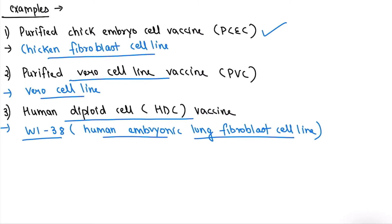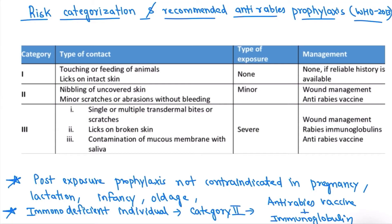Now coming to the most important part: risk categorization and recommended anti-rabies prophylaxis as given by WHO in 2013. There are three categories. In Category 1, the type of contact is touching or feeding of an animal, or licks on intact skin. The type of exposure is none, and the management is none if reliable history is available.